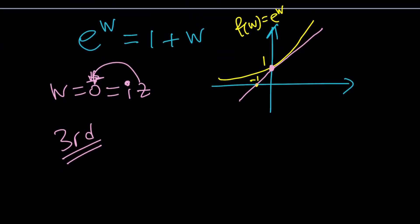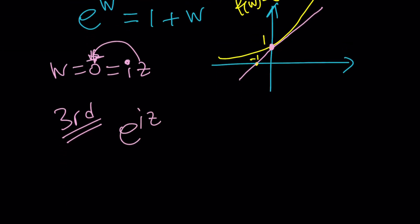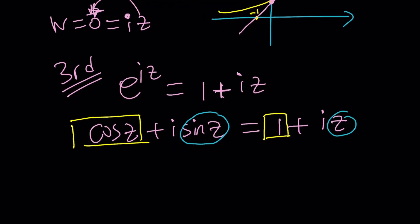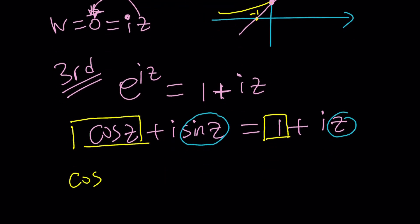Let me call that the third method because even though I wasn't planning on doing it but this just popped up. So my third method is going to be the following. Since we can write e to the iz using Euler's formula as cosine z plus i sine z equals 1 plus iz. What am I going to do? I'm going to compare the real parts and I'm going to compare the imaginary parts.